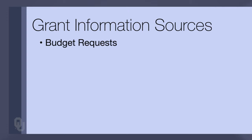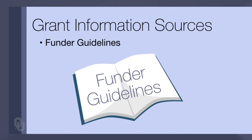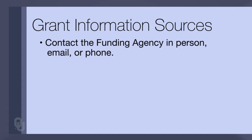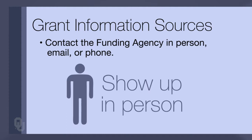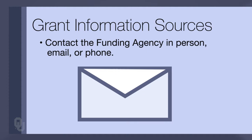Some other grant information sources you might look for would be an annual report of a foundation that gives grants, or an annual budget request of an agency requesting a budget allocation from the federal government, such as the National Science Foundation or the U.S. Department of Education. You might look for funder guidelines, or the agency or foundation's website that advertises its functioning and activities. You may also want to contact one of these funding agencies or foundations — in person, by appointment, or by email.